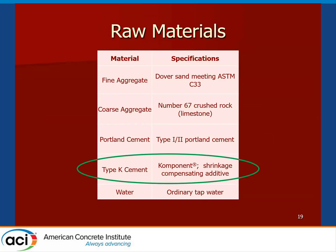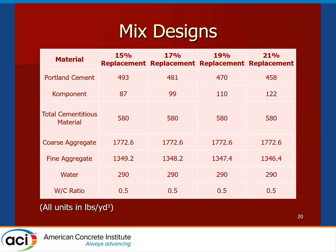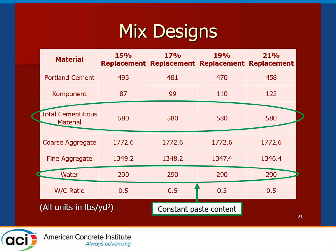The materials chosen for this project were intentionally very standard for an ordinary concrete mix design, with the exception of the Type K shrinkage compensating mineral additive. This additive was used as a proportional replacement of the total Portland cement content at 15, 17, 19, and 21 percent replacement. As Dr. Bescher pointed out, this can be up to 30 percent. Importantly, the total cementitious material and the water-to-cement ratio remained constant, because the amount of paste in the mix design dictates a lot of the shrinkage or expansive behavior.